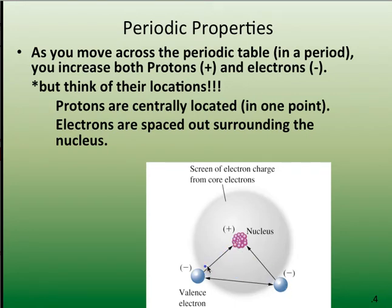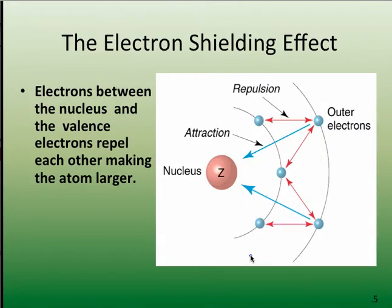Electrons tend to see that attractive force of the nucleus. If they're in the same energy level, the same distance, they don't really see each other, so they're not really as repelled. The electrons between the nucleus and those outer electrons do repel the outer electrons to a certain degree. Hence, we've got that shielding effect.